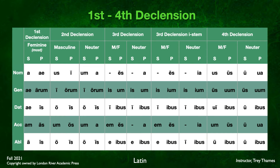Third declension i-stem is again very similar — we're going to add an i to the genitive plural, so instead of -um it becomes -ium: blank, -is, -i, -em, -e; plural -es, -ium, -ibus, -es, -ibus. For third declension i-stem neuter, we add an i in the nominative and accusative plural as well as the genitive plural, and the ablative singular also has a long i as an additional variant: blank, -is, -i, blank, -ī; plural -ia, -ium, -ibus, -ia, -ibus.